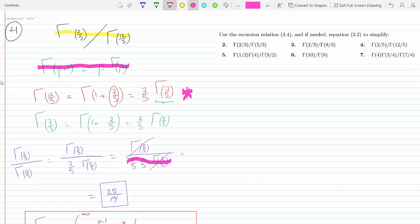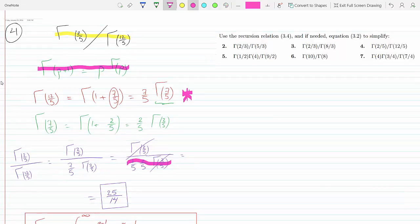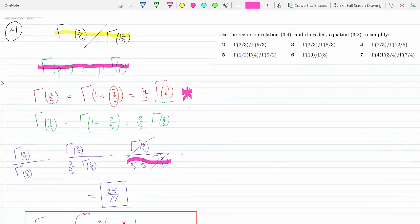And now it's convenient to just cancel out gamma 2/5 with gamma 2/5 because they're the same, so I don't have to really use equation 3.2 and evaluate them. They just go away and I'm just left with the fraction. So 1 over 7/5 times 2/5, which is 25 over 14.